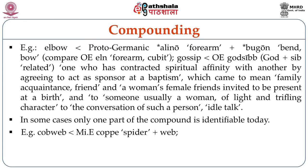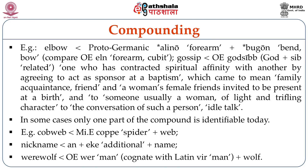In some cases, only one part of the compound is identified today. For example, 'cobweb' comes from Middle English 'cop' meaning spider, plus 'web'. 'Nickname' comes from 'an' plus 'eke' (meaning additional) plus 'name' — giving us 'nickname'. 'Werewolf' is from Old English 'were' meaning man, cognate with Latin 'vir', plus 'wolf' — giving us 'werewolf'.